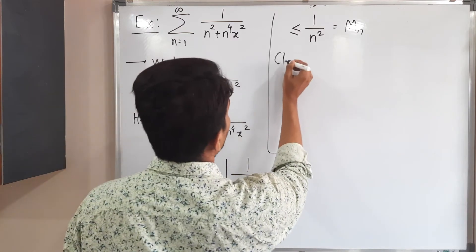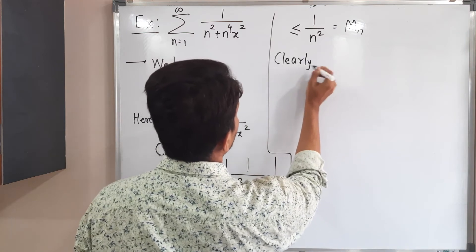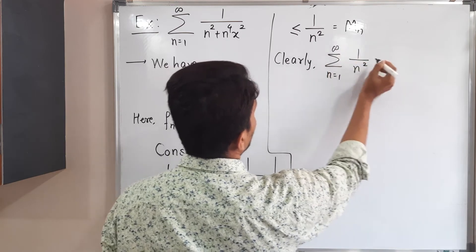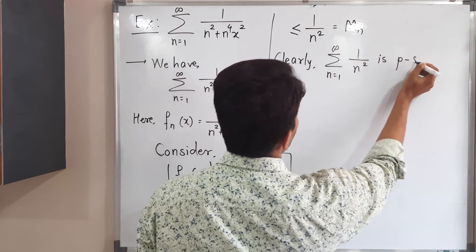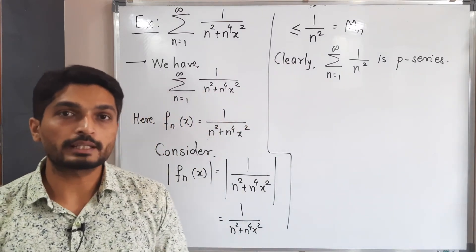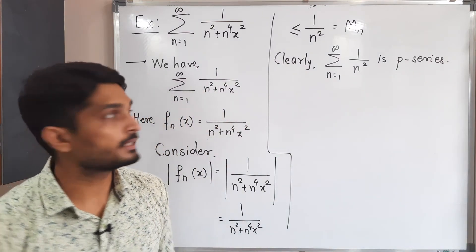Clearly summation 1 upon n square, n running from 1 to infinity is p series. Such types of series are called p series: summation 1 upon n raised to p. What is p here?